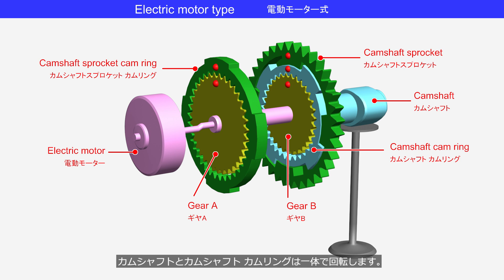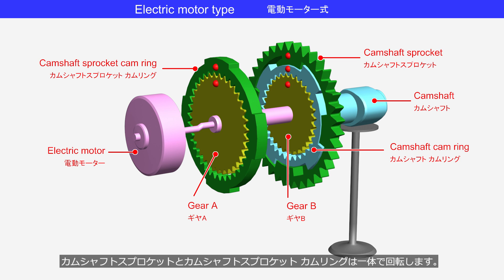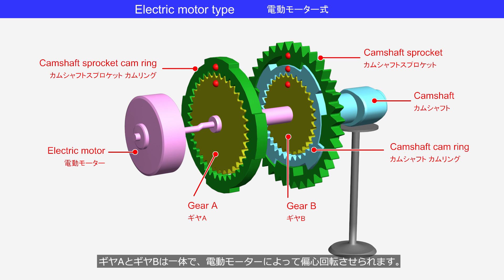The camshaft and the camshaft cam ring rotate together as a single unit. The camshaft cam ring meshes with gear B. The camshaft sprocket and the camshaft sprocket cam ring rotate together as a single unit. The camshaft sprocket cam ring meshes with gear A. Gears A and B are integrated, and are eccentrically rotated by an electric motor.